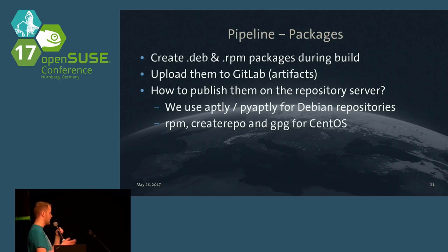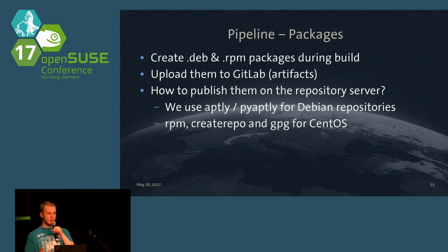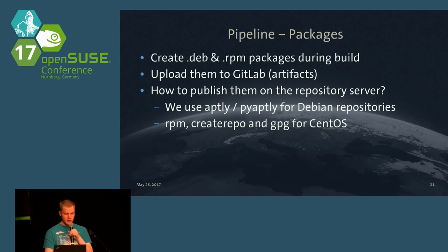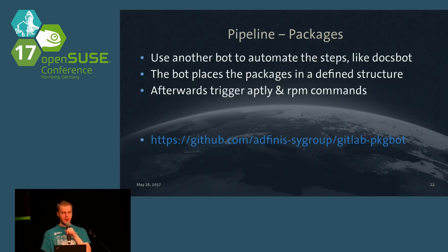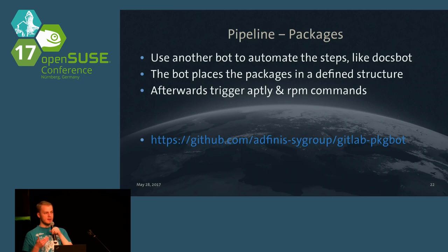We use aptly and pyaptly. Pyaptly is a small wrapper around aptly which makes it configurable with a YAML file so you don't have to hassle with all the CLI commands. Since aptly currently does not support RPM packages, we use the default core tools — just RPM, createrepo, and GPG — for the CentOS or SUSE repositories. For the publishing process we took a similar path as for the docs bot: a small web server running on the repository server is triggered by a webhook from GitLab, and it extracts the artifacts, places them in a defined structure, and triggers the required commands to update the packages.